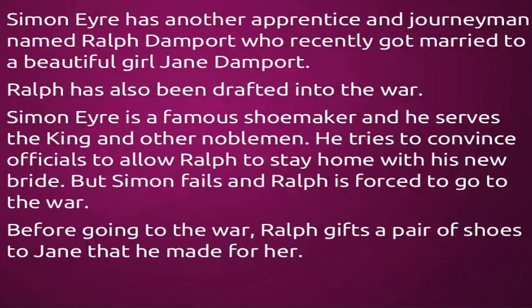Simon Eyre has another apprentice and journeyman named Ralph Dampert, who recently got married to a beautiful girl, Jane Dampert. Ralph has also been drafted into the war. Simon Eyre is a famous shoemaker and he serves the King and other noblemen. He tries to convince officials to allow Ralph to stay home with his new bride, but Simon fails and Ralph is forced to go to the war. Before going to war, Ralph gifts a pair of shoes to Jane that he made for her.